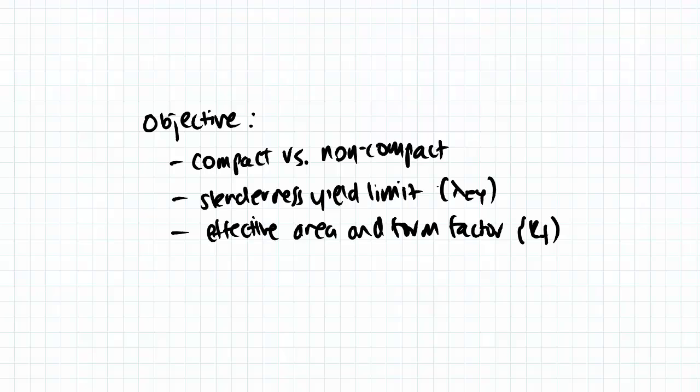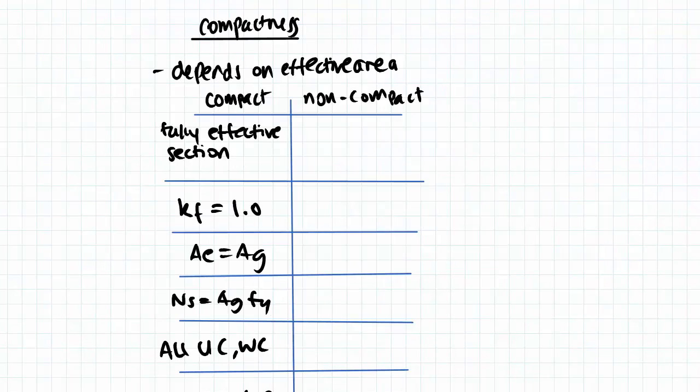We're going to be able to use this slenderness yield limit along with our plate slenderness in order to determine the effective area of our section and also determining form factor, which is used in finding our design section capacity in compression. So first we begin by comparing compactness, which depends on the effective area.